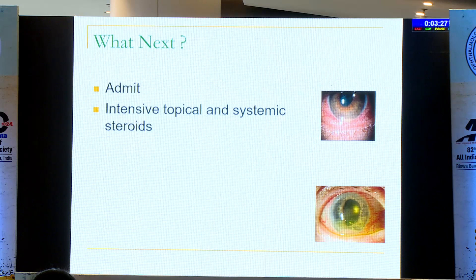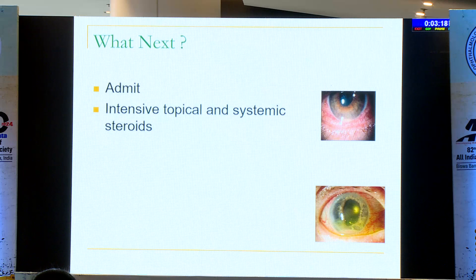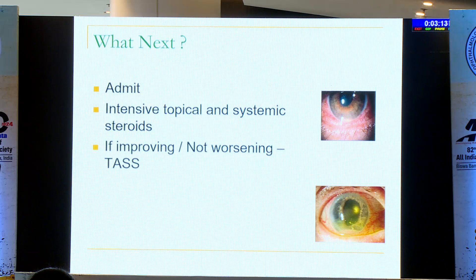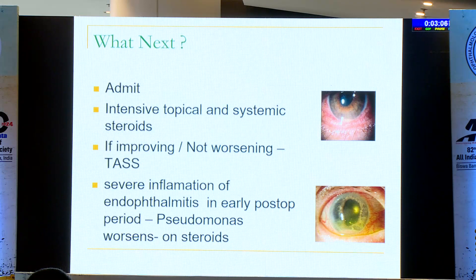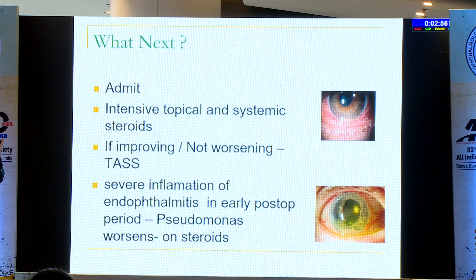Admit these cases. If it is somewhere in between and you suspect something like Pseudomonas, don't delay. But if it is unclear, you can give a trial of topical and systemic steroids and assess hourly. If it is improving and not worsening, it probably suggests TAS. But if it is a severe inflammation, because in Pseudomonas endophthalmitis, within minutes the cornea starts melting — so you cannot wait in those cases.